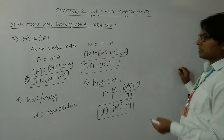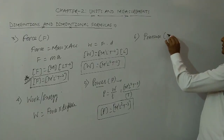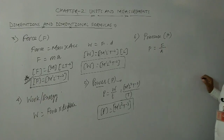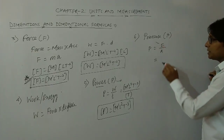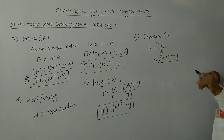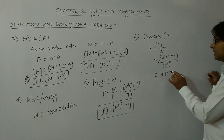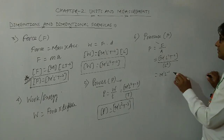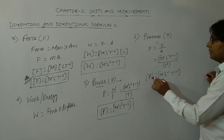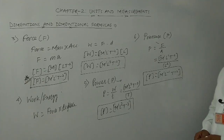You can also write the dimensional formula for pressure, denoted by P. Pressure is force per unit area. The dimensional formula of force is M¹ L¹ T⁻², and area is length times length, so it is L². Dividing, the dimensional formula of pressure becomes M¹ L⁻¹ T⁻². This is how we can express any physical quantity in terms of its dimensional formula.